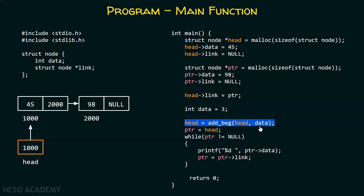From the previous presentation, we have learned that this is passed by value and not passed by reference. So, it should be well noted that we can't replace this line of code by this other line of code. There is one change required over here. Instead of passing head, we can pass the address of head in order to make changes, if we really don't want to return the head from the function. We need to pass the address of head.